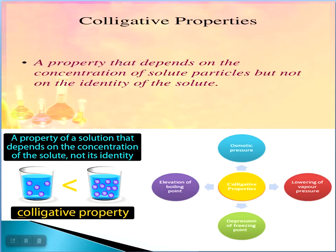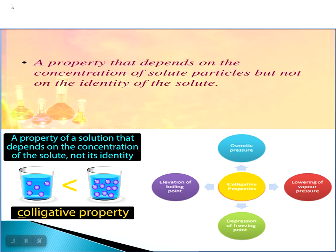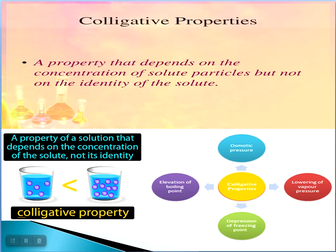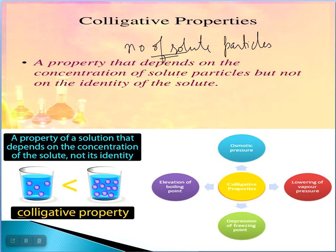Number one: what are colligative properties? Colligative properties depend on the number of solute particles and their concentration — not their nature. They are independent of the nature of the solute, but depend only on how many solute particles are added. That is known as colligative properties.